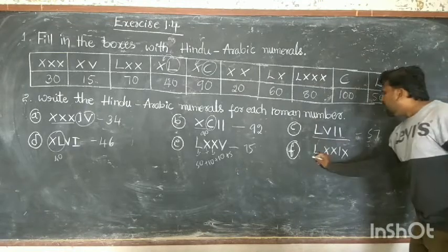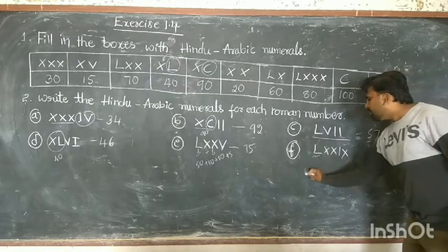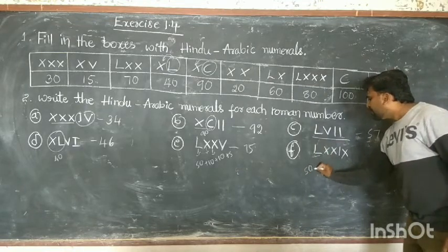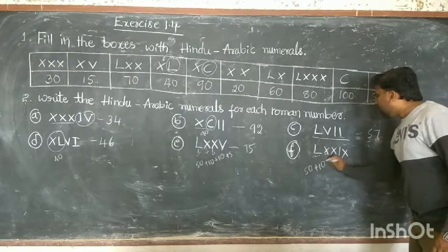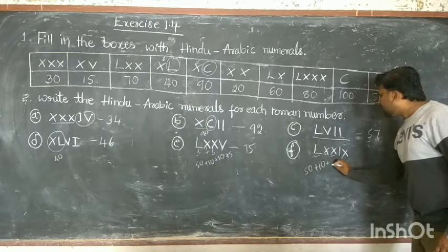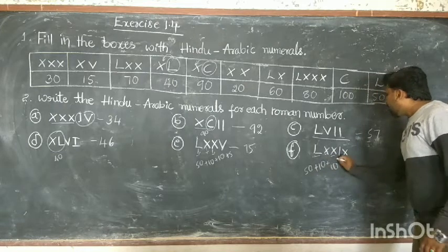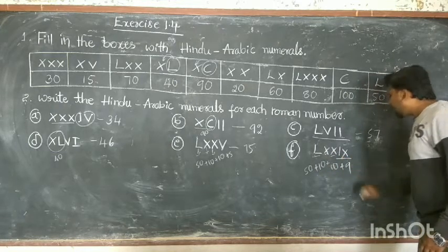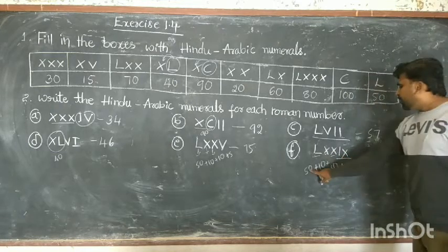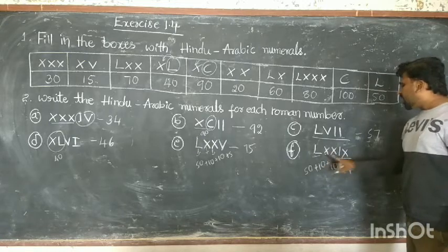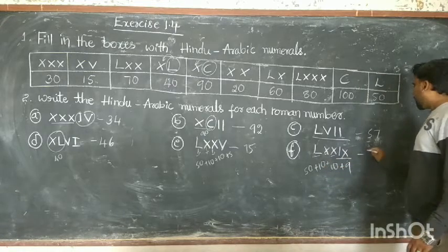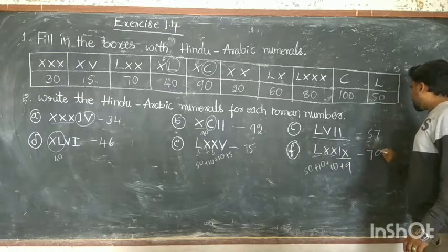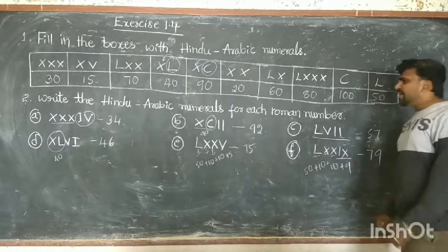And the last one: L means 50, X means 10, again X means 10, then IX means 9. So 50 plus 10 plus 10 plus 9 — the final answer is 79.